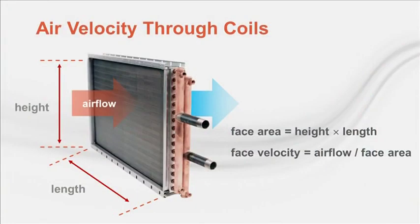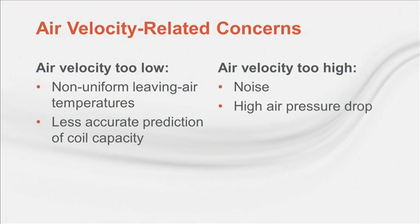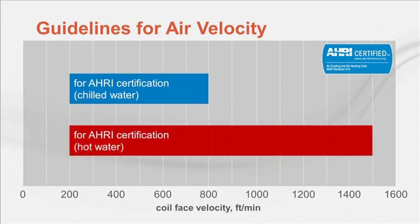Now let's switch from water velocity to air velocity through the coil. The contributing attributes to air velocity are the face area of the coil and the airflow rate. Care should be taken to avoid air velocity that is too high or too low. Risks of too low air velocity include non-uniform coil leaving air temperatures and less accurate capacity prediction. Too high air velocity can contribute to noise, excessive air pressure drop, and increased risk of moisture carryover. AHRI 410 requires cooling coils to have a face velocity between 200 and 800 feet per minute, and heating coils between 200 and 1,500 feet per minute.